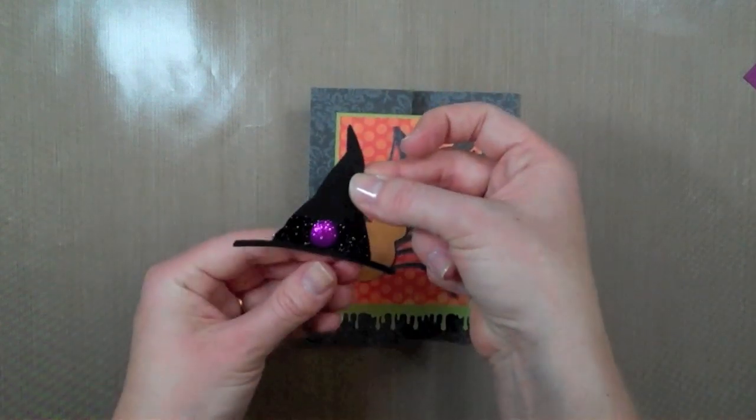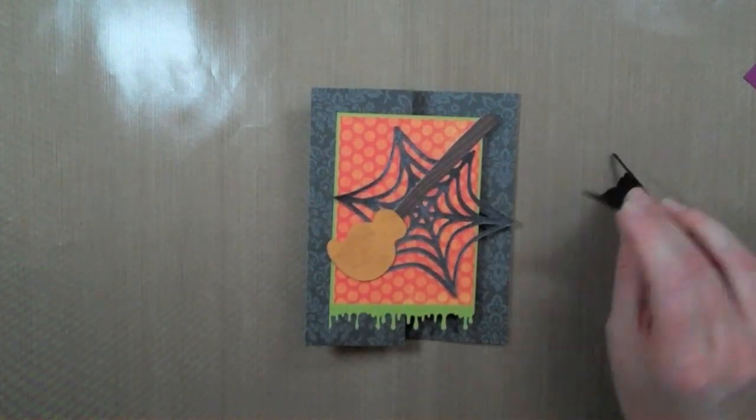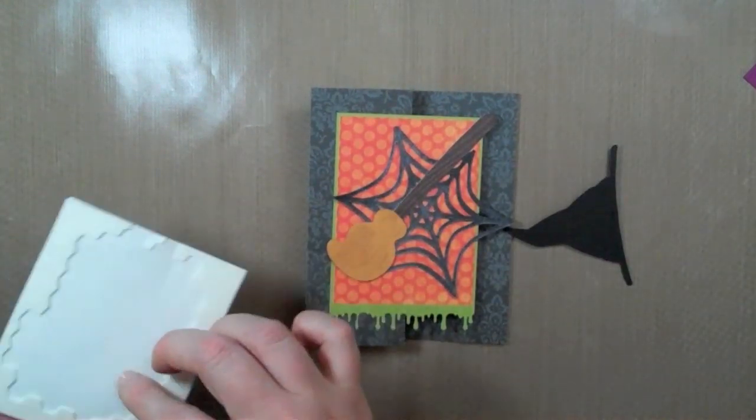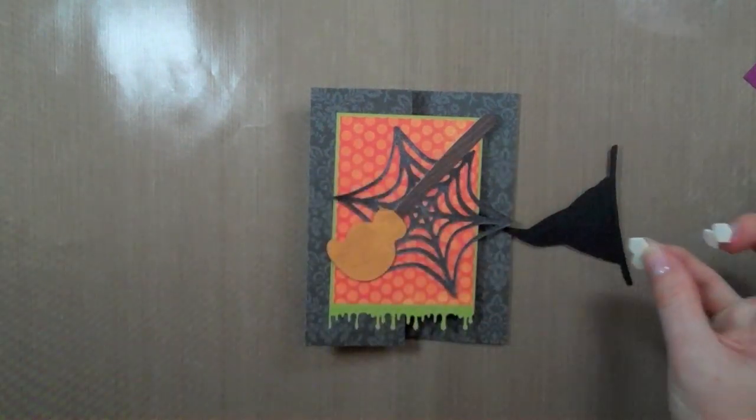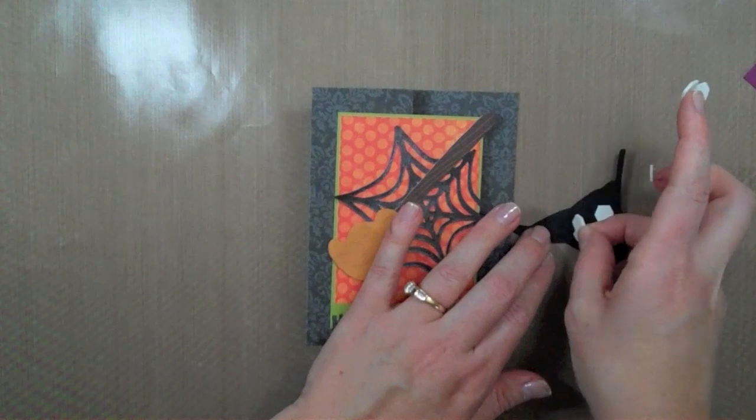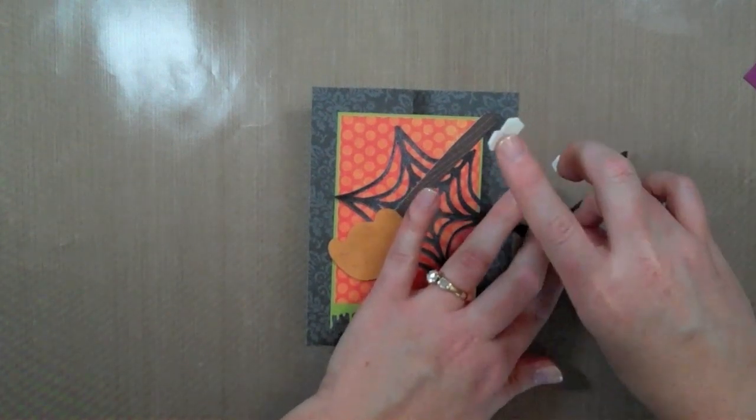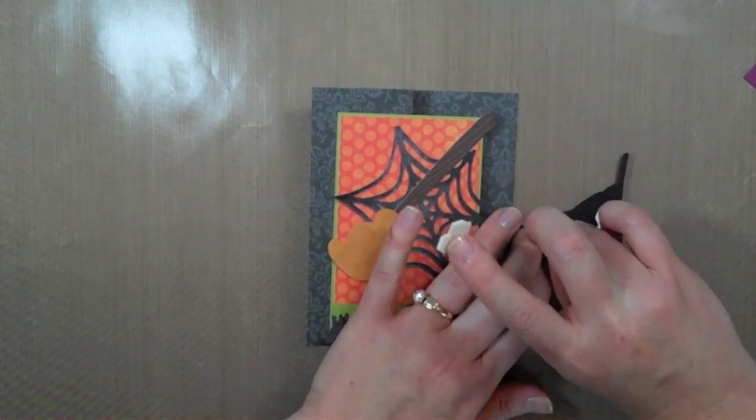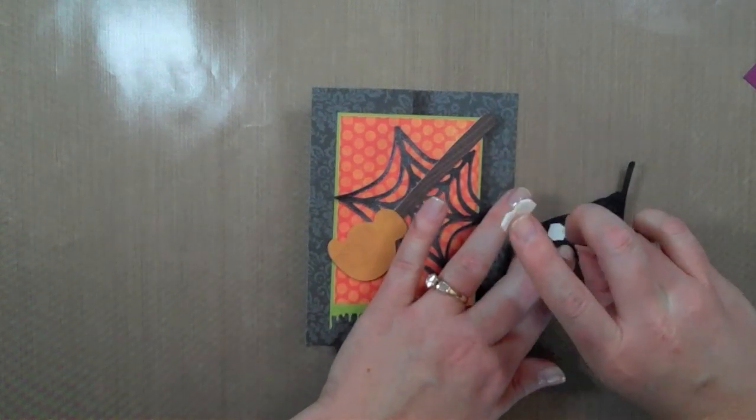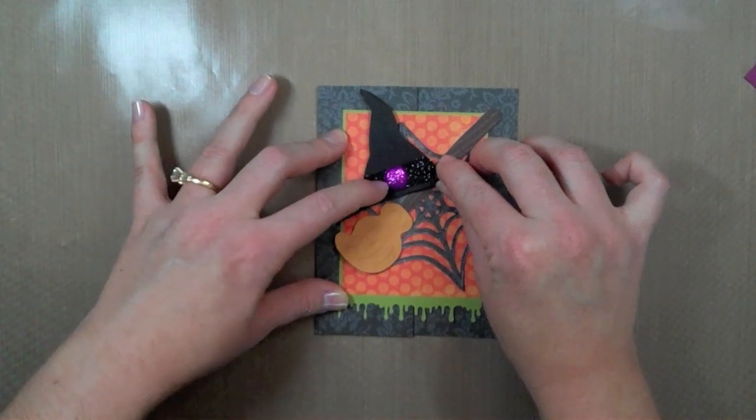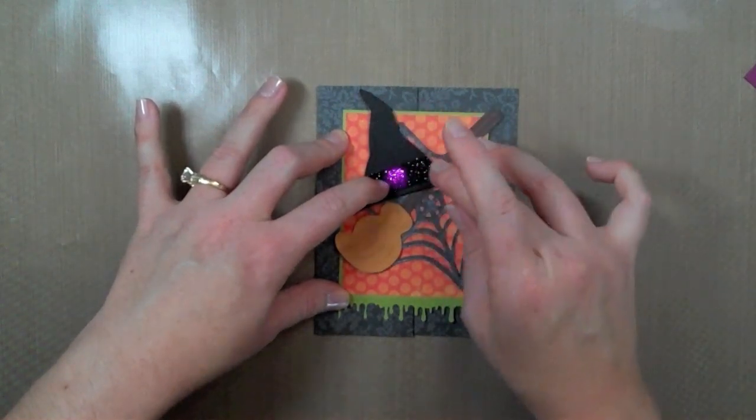And then I can bring my witch hat in and this one I am actually going to put on dimensionals and I think I am going to put it on a couple layers so I will just add some dimensionals on the back and then add some to the top of those to make it a double layer. This goes just like that.